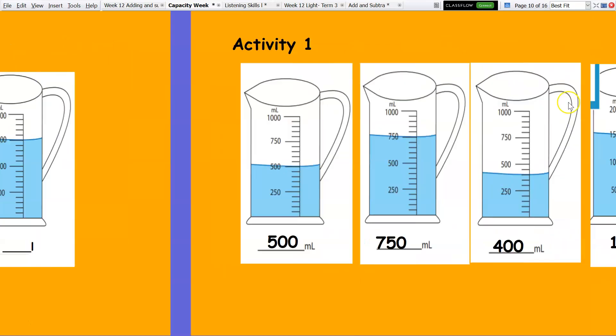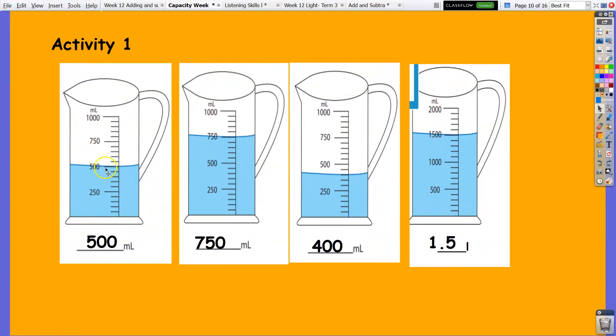Time is up. Now here are the answers: the first jar is 500 ml, the second jar is 750 ml, the third jar is 400 ml. And how do we do this? We counted from zero and we do it by 50s, so 50, 100, 150, 200, 250, 300, 350, 400. And finally for the fourth jar you are asked to answer it in liters.